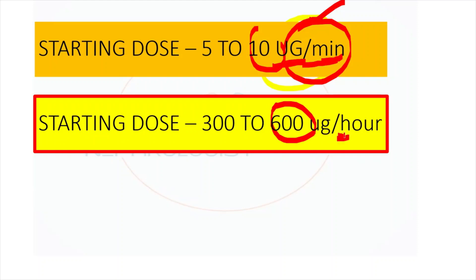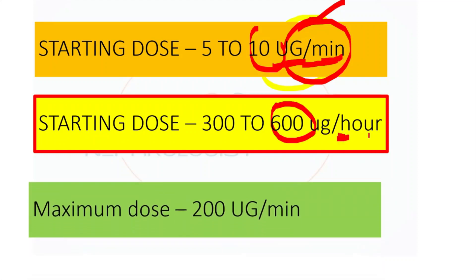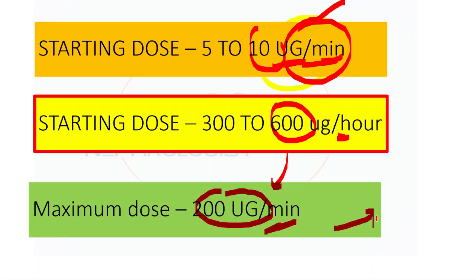On a per-hour basis, the starting dose is approximately 600 micrograms per hour. The maximum dose is up to 200 micrograms per minute — though this is not a strict ceiling and can be exceeded if required. Most of the time, the target is achieved at 50 to 100 micrograms per minute.